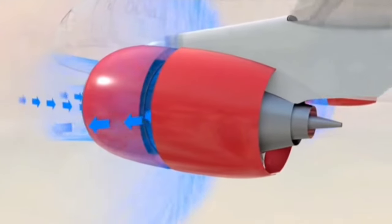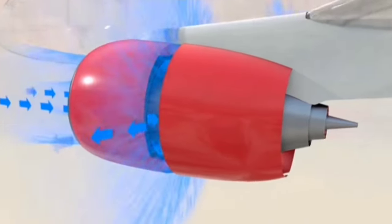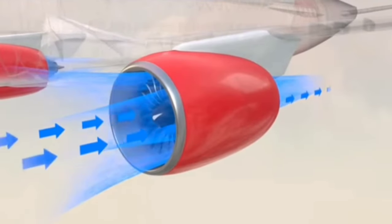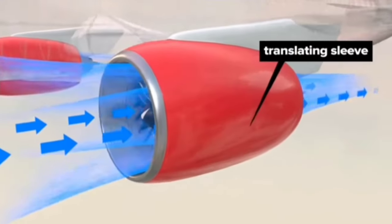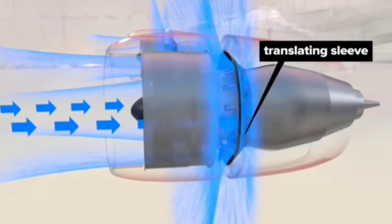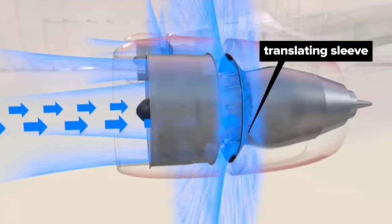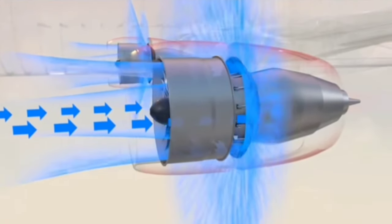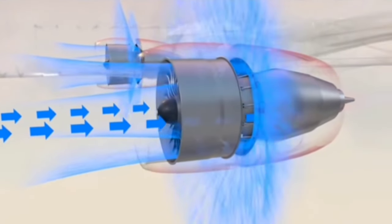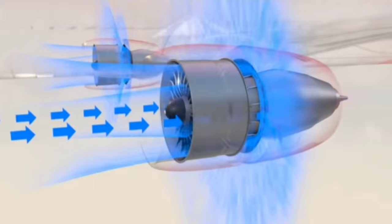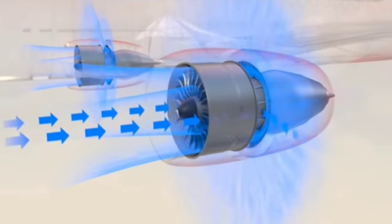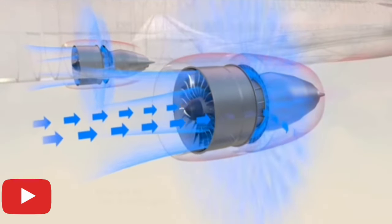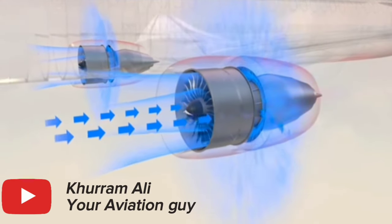The thrust cowling exterior is a translating sleeve that moves backwards, pulling a ring of connected blocker doors into an angled position to block and reverse the normal path of thrust, which slows down the aircraft speed.